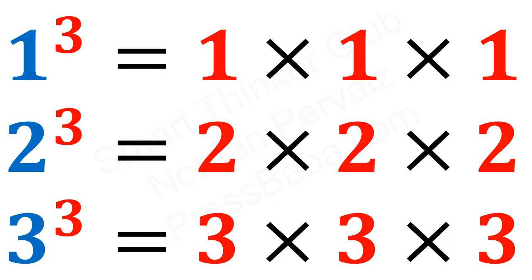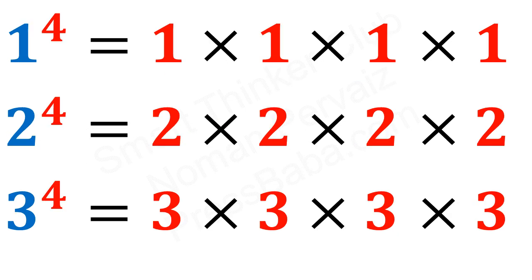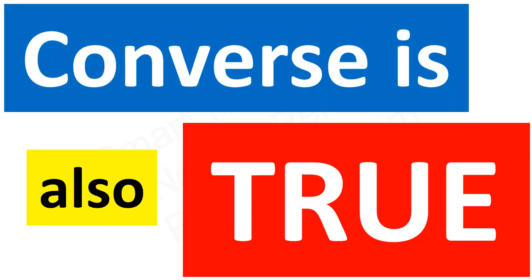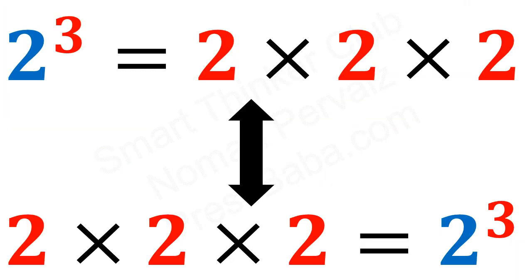1 raised to the power 3 means multiply 1 three times. 2 raised to the power 3 means multiply 2 three times. Similarly, 1 raised to the power 4 means multiply 1 four times. 2 raised to the power 4 means multiply 2 four times. And 3 raised to the power 4 means multiply 3 four times. The converse is also true — if we have 2 multiplied 3 times, we can write it as 2 to the power 3.